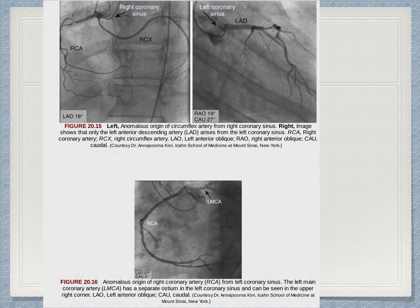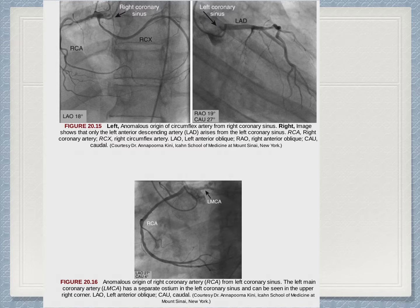In figure 20.15, we can see coronary anomalies. In the upper left, we're seeing a right circumflex — the circumflex artery arising from the right coronary sinus. On the right, we're seeing an LAD arising from the left coronary sinus, just the LAD, which means the circumflex is coming from another place. Also shown is the anomalous origin of the right coronary artery from the left coronary sinus, where the left main coronary artery has a separate ostium in the left coronary sinus, seen in the upper right corner.